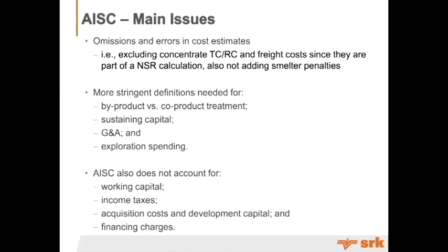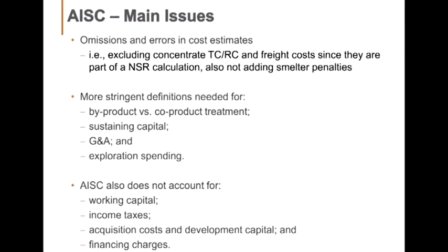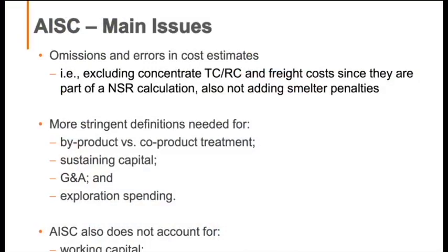What we find with the main issues — and we do a lot of these and see a lot of them — is that items are neglected. Investors are complaining about the inconsistency in reporting, and I think a lot of it has to do with lack of standardization. For example, in one due diligence, TCRCs were taken out of the revenue stream, so the operator felt they didn't need to count them in costs. But with all-in sustaining costs reporting, you have to count those. A lot of times companies will also neglect to put in infrastructure costs, thinking it's not related to mining. So one of the big issues we find is there's a lot of things omitted.